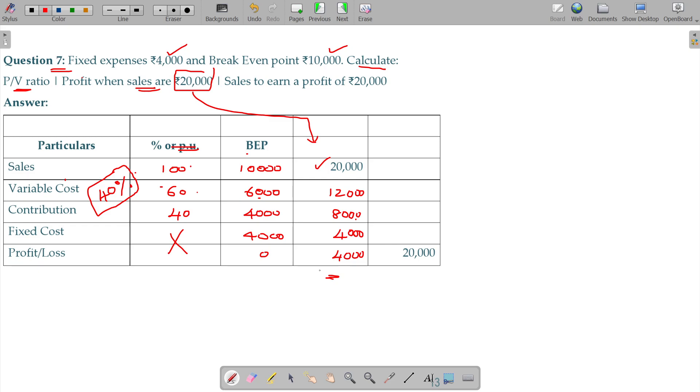Next question. Sales to earn a profit of 20,000 rupees. Sales to earn a profit of 20,000 rupees. What could be the sales?